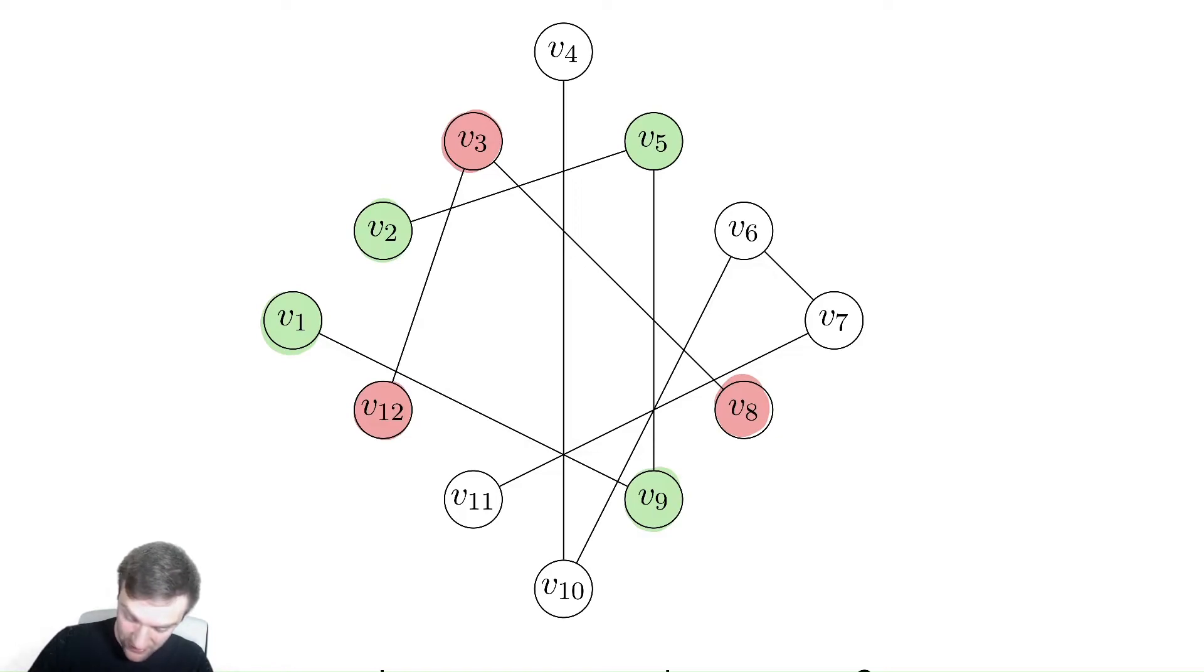Now let's look at another vertex, say v11 here. v11 is in the same set as v7, is in the same set as v6, is in the same set as v10, is in the same set as v4.